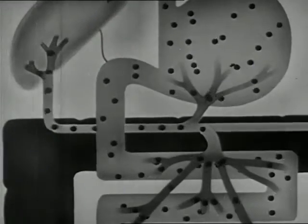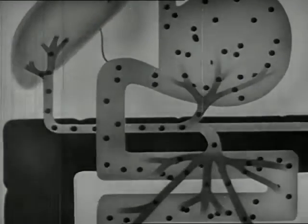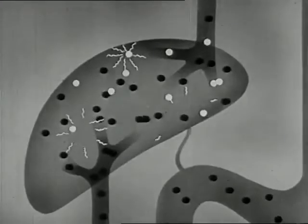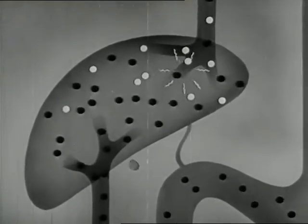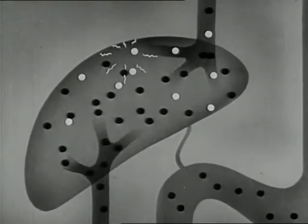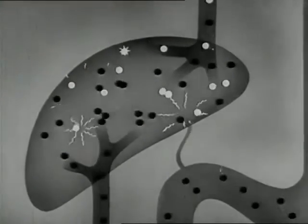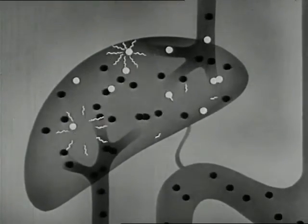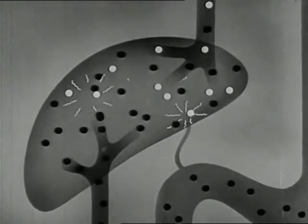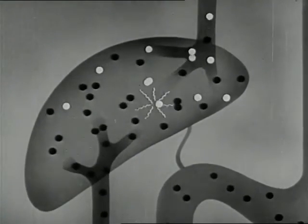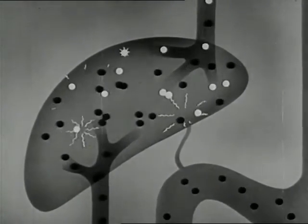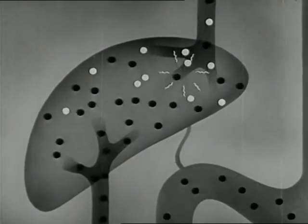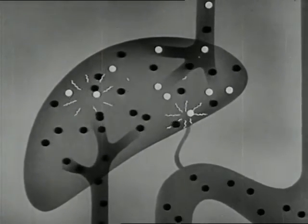Enzymes found only in the liver react with the alcohol and change it to acetic acid, shown as white dots. This means that the alcohol burns or oxidizes, thereby releasing calories of heat energy. The acetic acid molecules and the molecules of ethyl alcohol not acted upon immediately by the liver pass on through the veins to the heart.